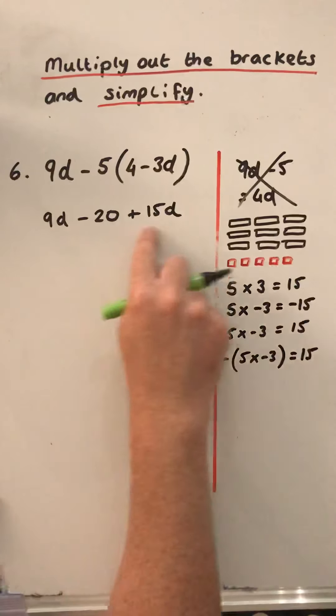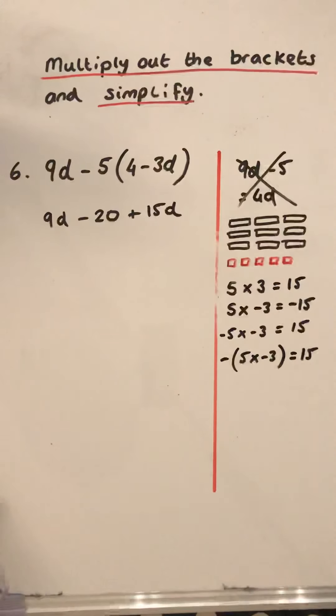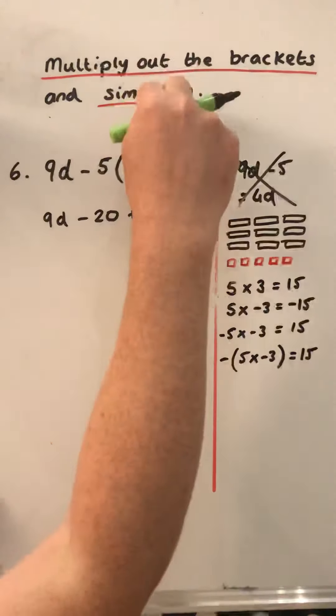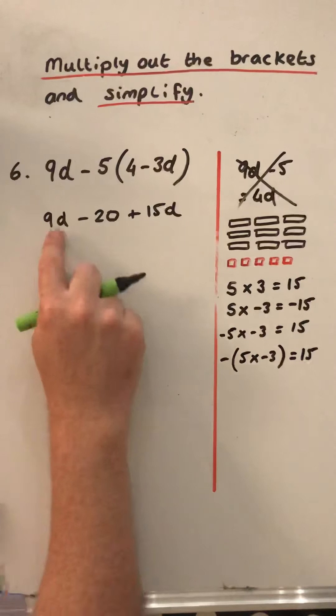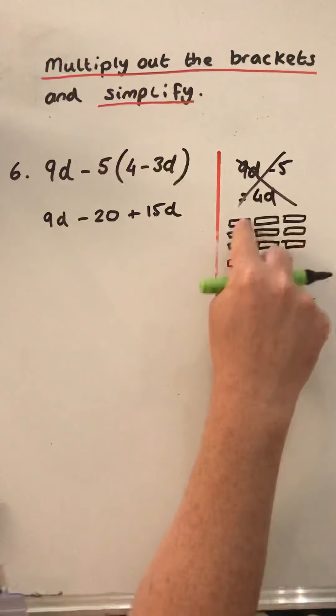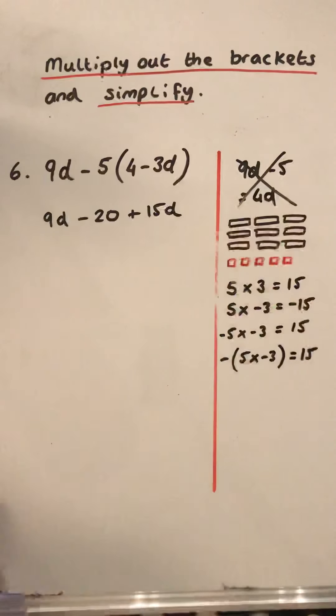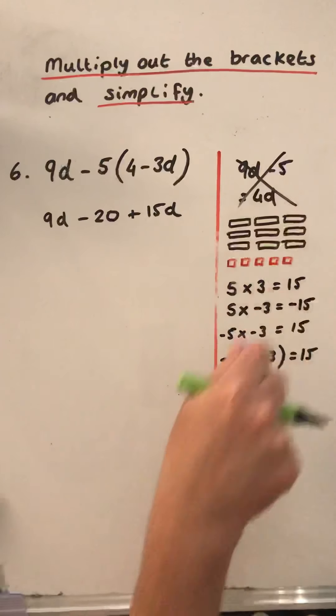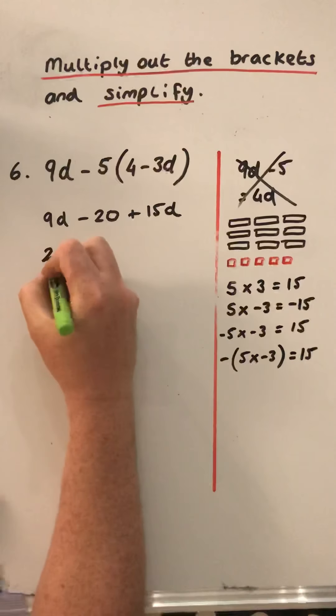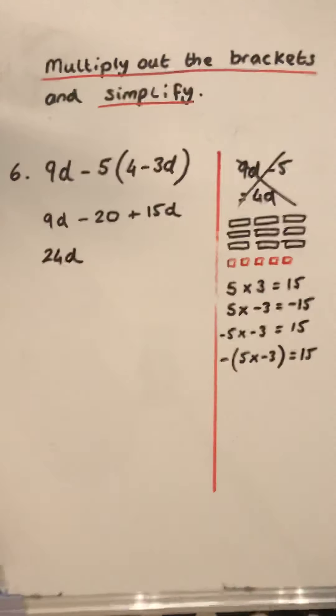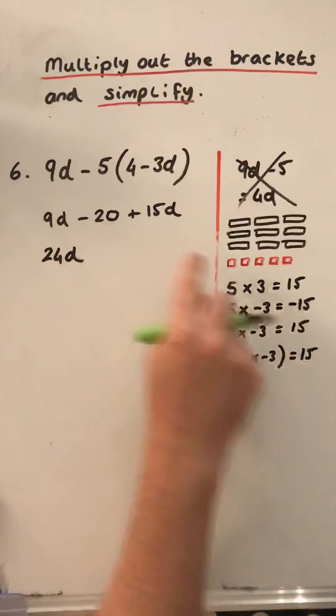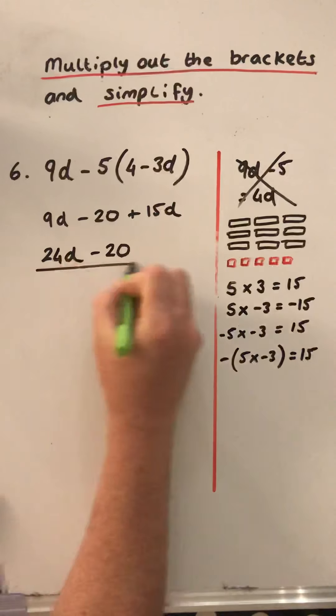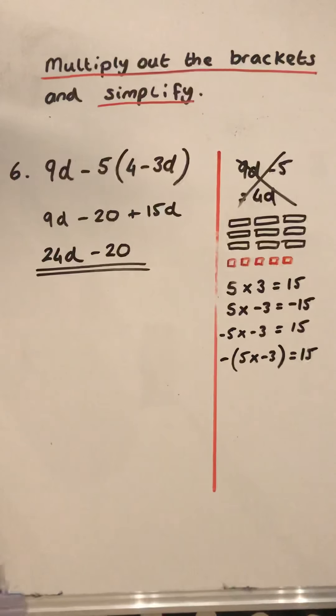At this point, we have multiplied out the brackets. We are then looking to simplify it. There's more than one thing to do here. We've got 9d. So we've got 9 of these bars. And we've got another 15. So we've got 9 plus another 15, which is 24. And we've got negative 20 ones. So 24d minus 20.